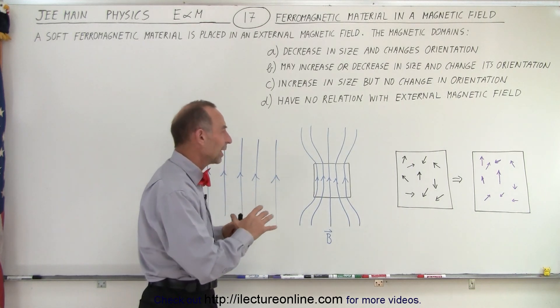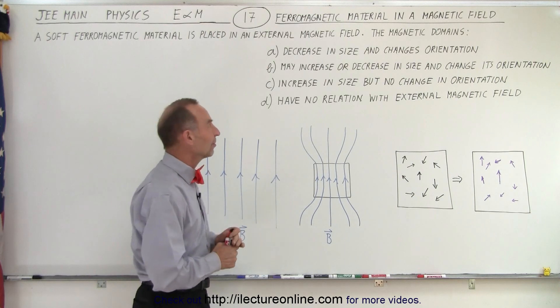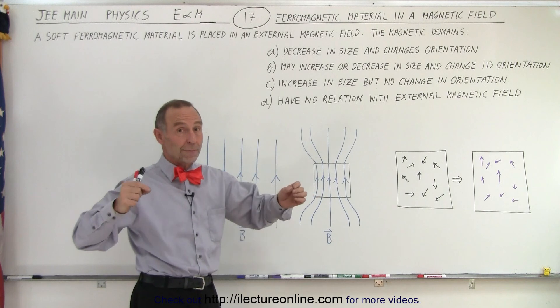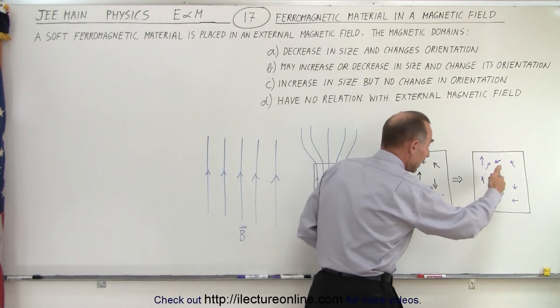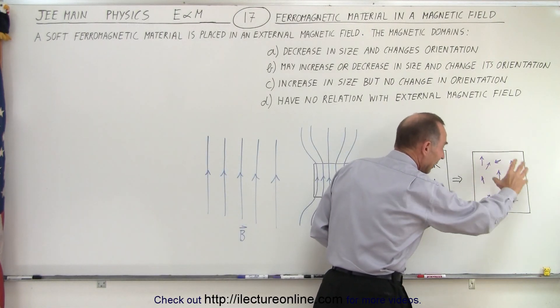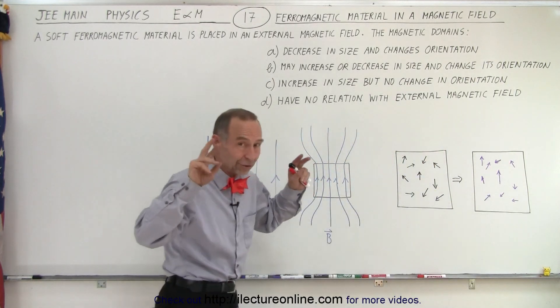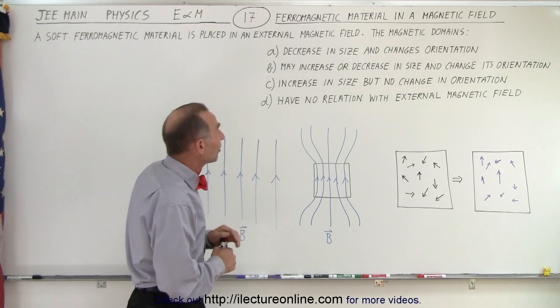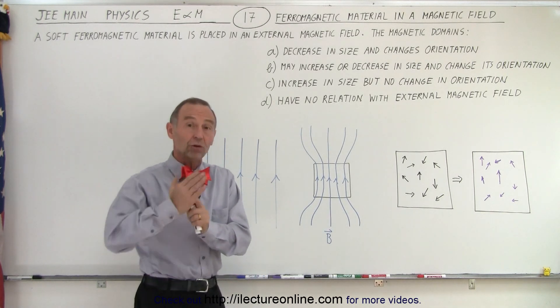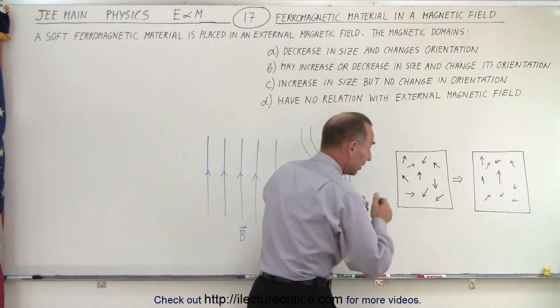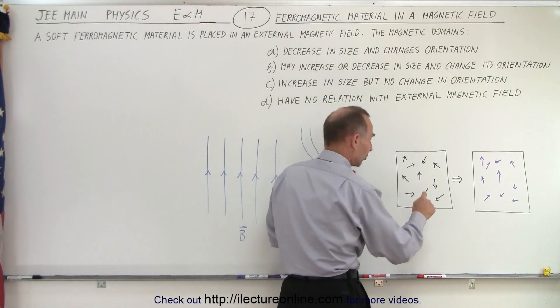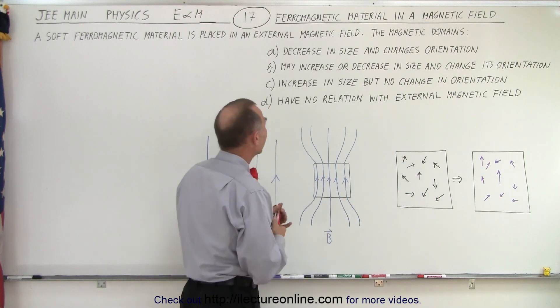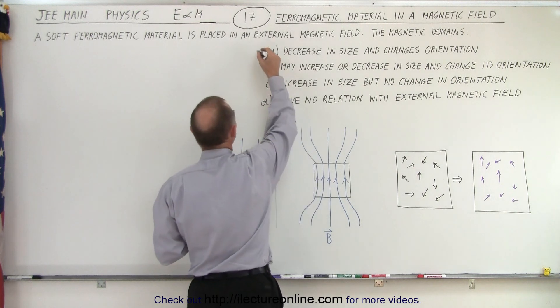So now when we read the four possible answers, how can we make sense out of this? The first one says that the magnetic domains - and first of all, what do we mean by the magnetic domains? I'm assuming what's happening inside the ferromagnetic material called domains. It says it decreases in size and changes orientation. Well, change orientation seems to make sense. Decrease in size is not necessarily correct, because this one will actually increase in size. So because of that, I would say A is not a correct answer.